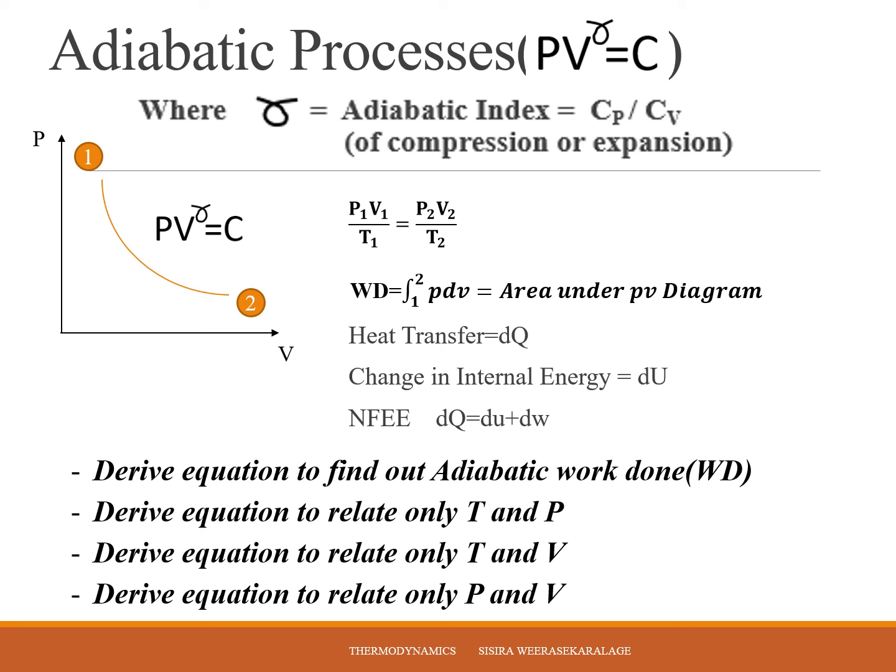Your index of compression or your index of expansion, that means adiabatic index. It is a special one which is CP over CV. So gamma is defined as CP divided by CV. So your process is PV to the power gamma equal constant. That is the law of the process, your adiabatic process.